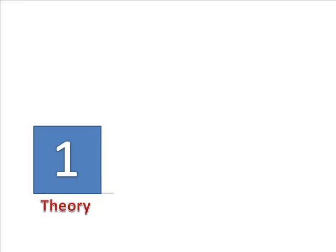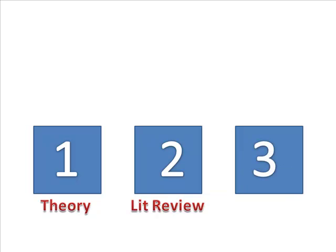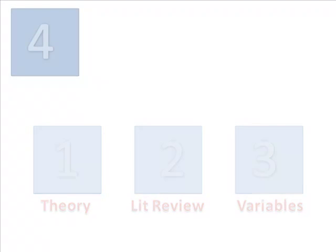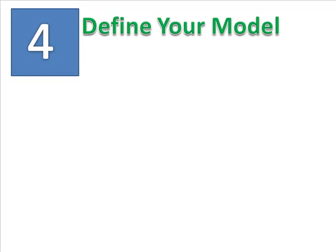At square one, you formed a theory — a collection of ideas. At square two, you did a literature review to summarize what has already been done. At square three, you selected your variables: handedness and intelligence. In square four, you used your theory to clearly define your model.